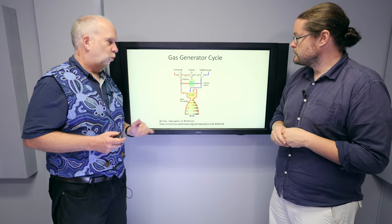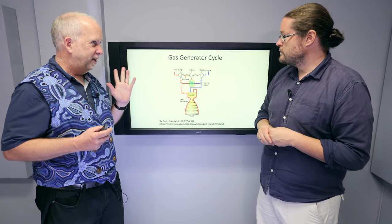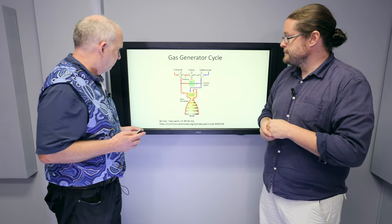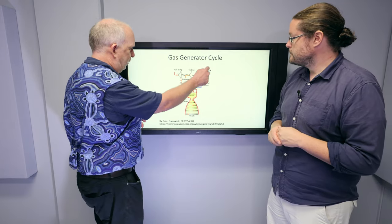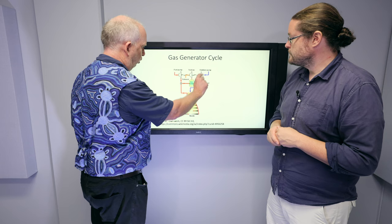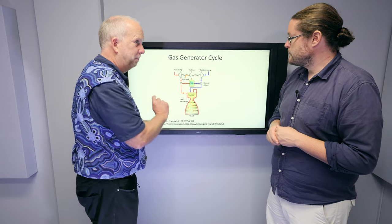But the normal way this is done is what's called the gas generator cycle. This is what powers the Falcon engines. So what you do is you've got the fuel pump and the oxidizer pump, and they share a shaft with a turbine.